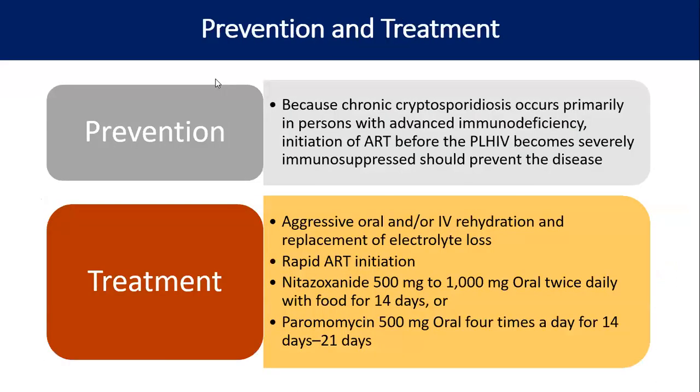Prevention is by improving immunity through early initiation of ART and increasing CD4 count. Treatment is aggressive oral or IV rehydration and replacement of electrolytes, rapid ART initiation, and nitazoxanide 500–1000 mg twice daily for 14 days, or paromomycin 500 mg four times a day.